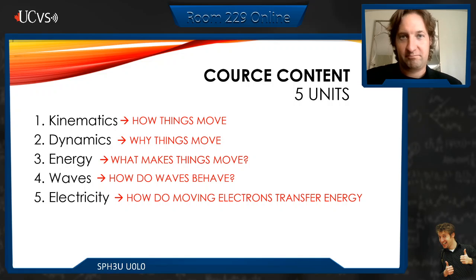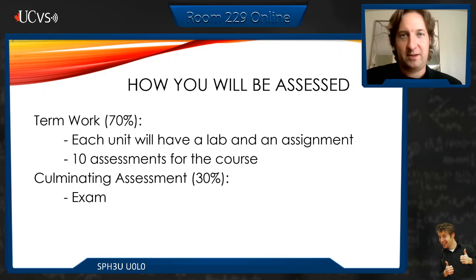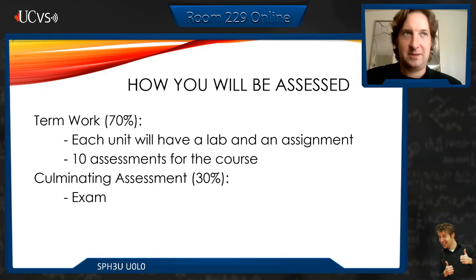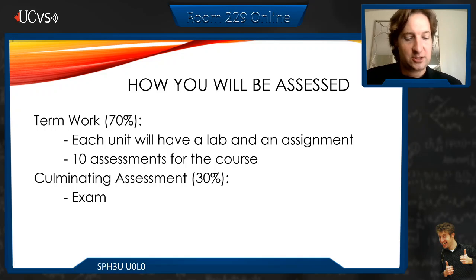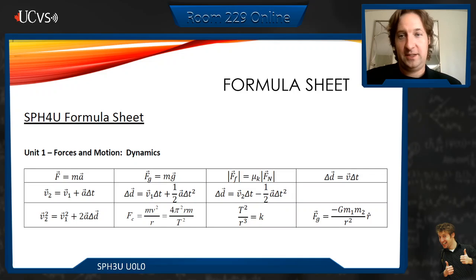We're going to do the usual 70-30 split — there will be a 30% exam, and we're working out the details. For each of the five units, the big assessments will always be a lab and an assignment. The assignment is basically going to be like an open-book test — a more difficult version since you have all your notes available. We'll talk about how to do virtual labs and write them up as we go. There's also a formula sheet subdivided into units, and a reference sheet for all the constants we'll use.